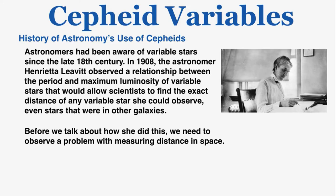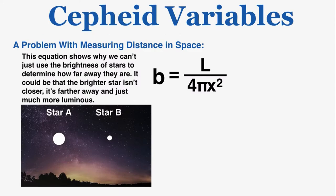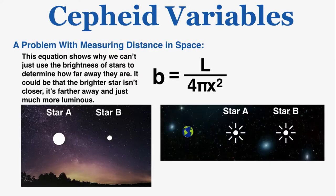Before discussing how she did this, we need to understand a problem with measuring distances in space. The brightness equation relates the brightness observed on Earth, the luminosity of a star, and the distance from Earth to the star. You might wonder why we can't just use this equation to find how far away any star is based on its brightness — the answer is that we don't know how luminous the star is. For example, star A may appear brighter than star B in the night sky, and we might conclude star A is closer to us.